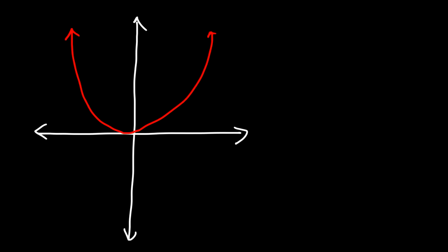Here's another example: y equals x squared. Is it a function? Let's see if it passes the vertical line test. Notice that the vertical line touches the graph only at one point, so this passes the vertical line test and is a function.